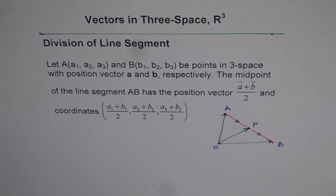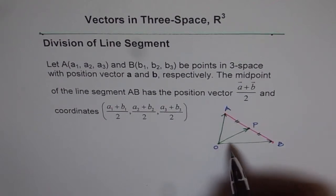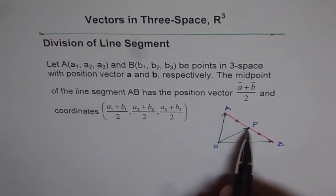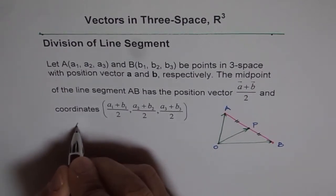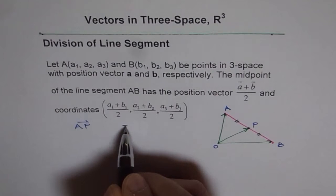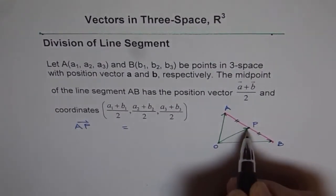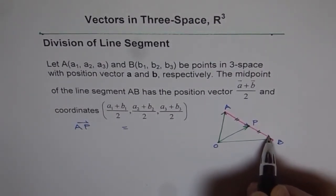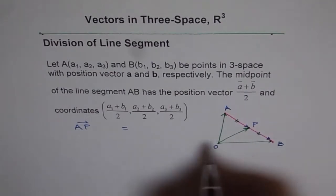Now if you see this, we know that AP equals PB, right? So we can write AP because P is the midpoint, AP equals PB. Let's consider the vector in this direction equals PB.